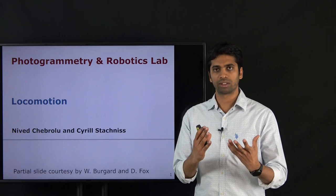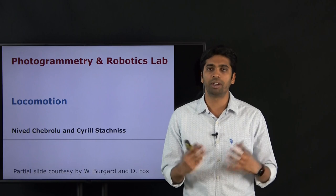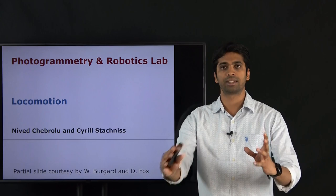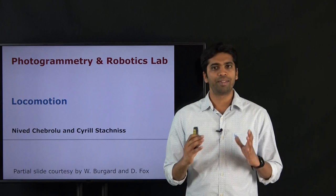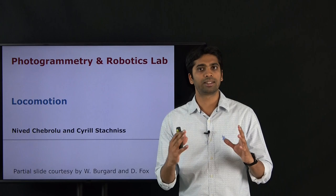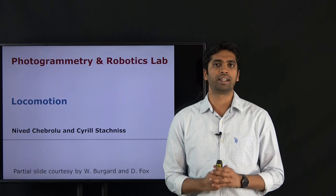In each of these cases we provide certain input to these mobile robotic systems — this could be movement of motors, movement of the legs, movement of the propellers — and this results in a certain movement for that mobile robotic system in its environment. Understanding how these inputs link to the movement is what locomotion does. In this lecture we will primarily focus on mobile systems that are wheeled, equipped with wheels which let them move around in their environment.